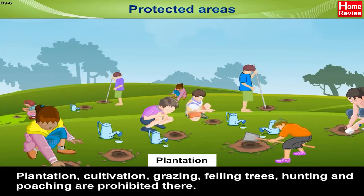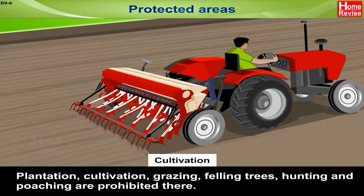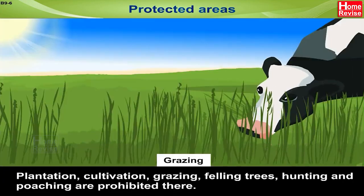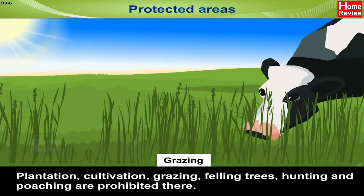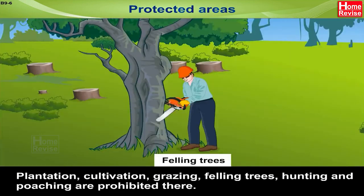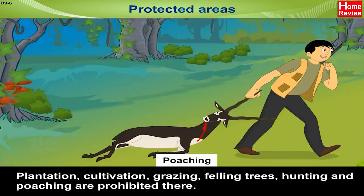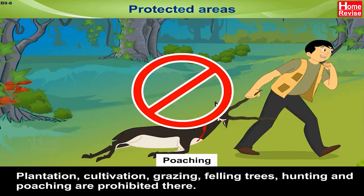Plantation, cultivation, grazing, felling trees, hunting, and poaching are prohibited in these protected areas.